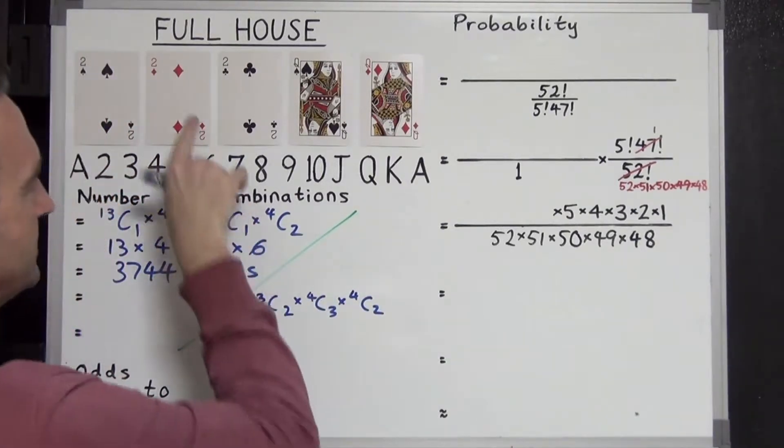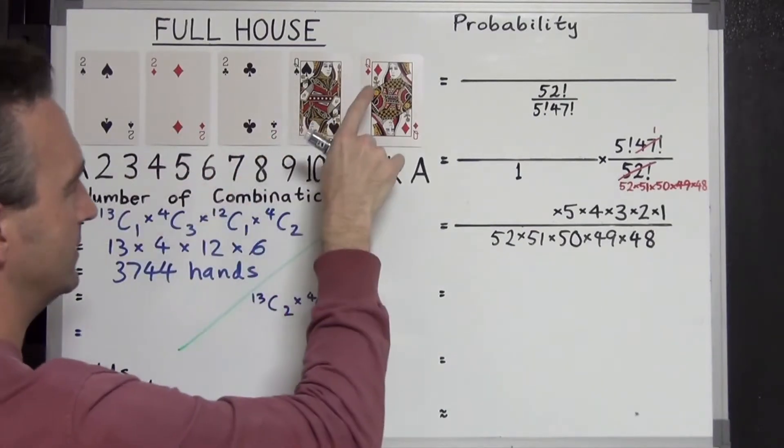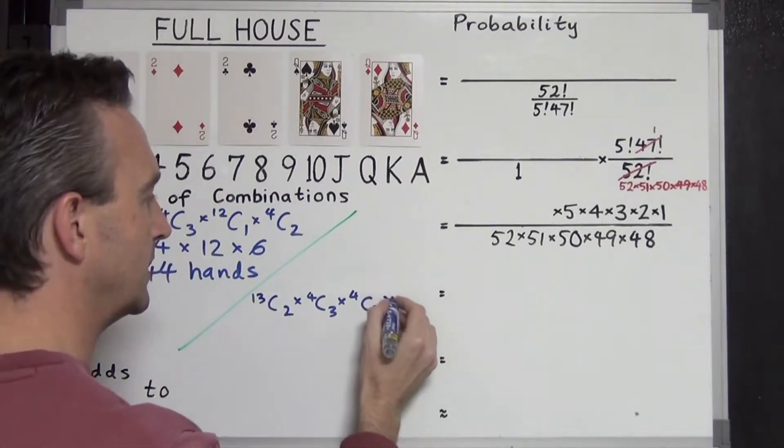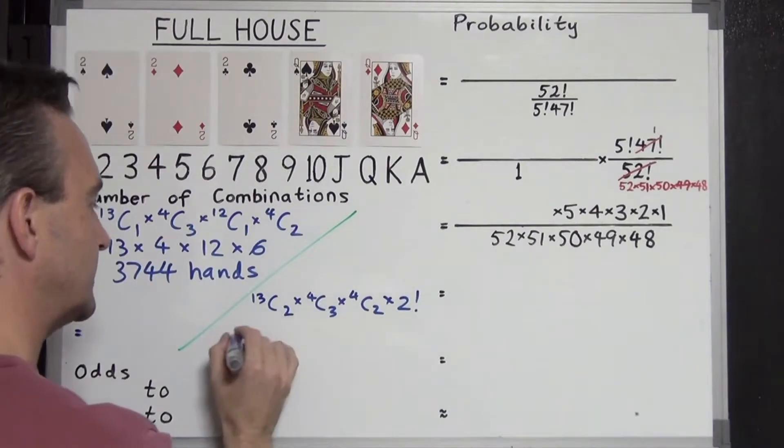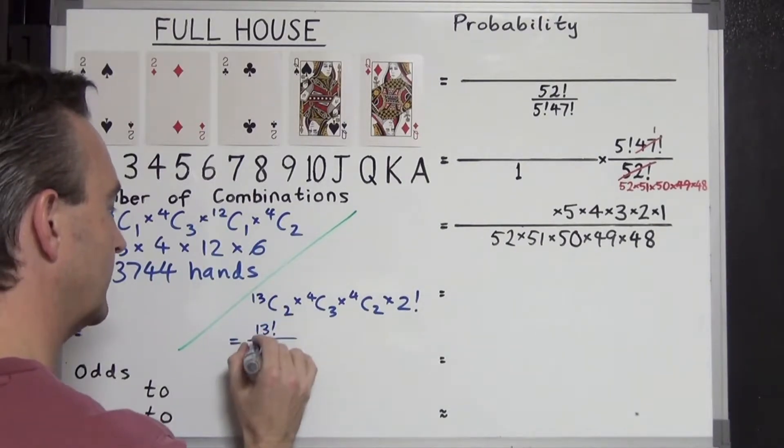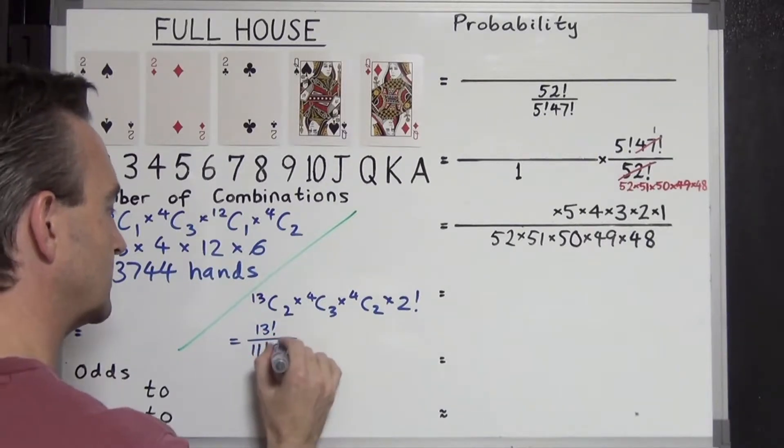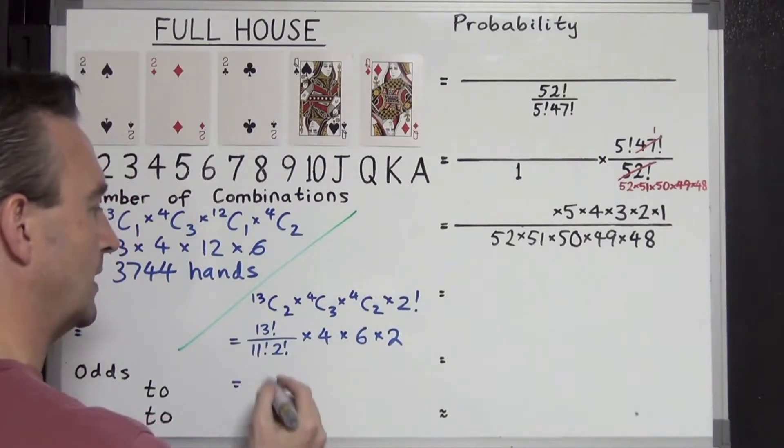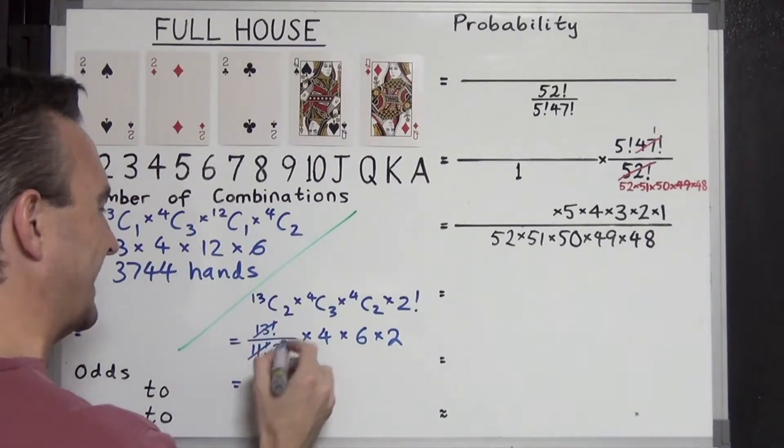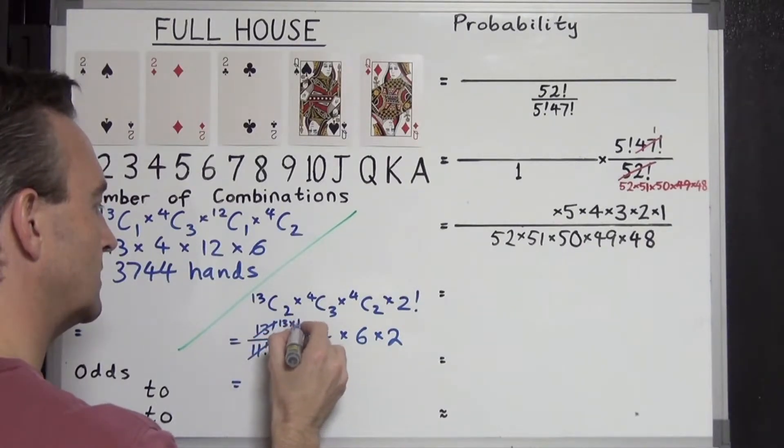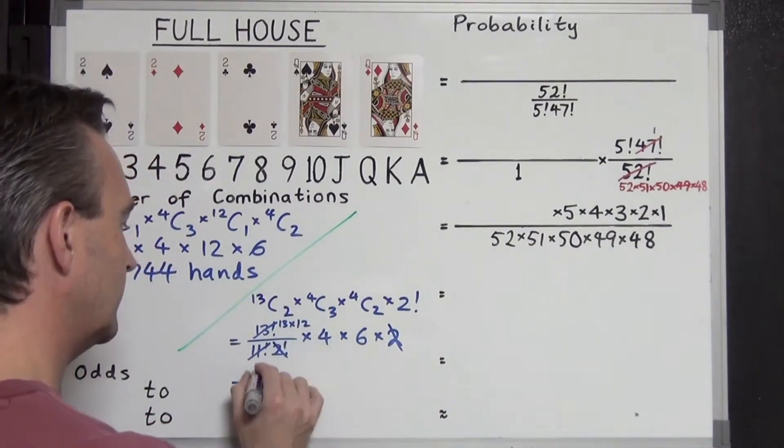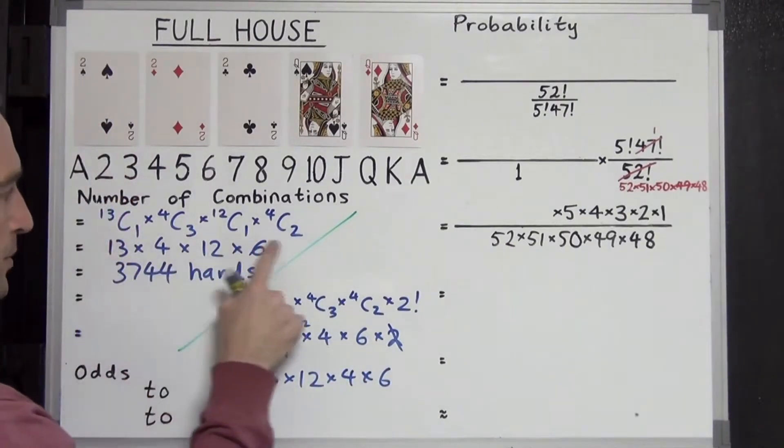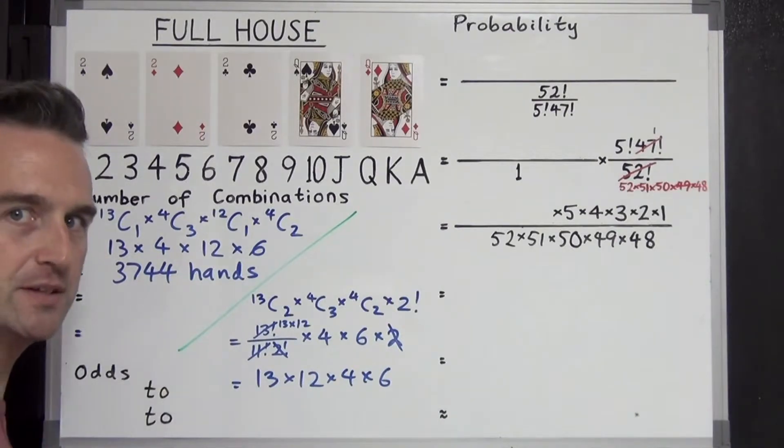But this is not quite finished. Since these two situations are different, we've got three of a kind here, two of a kind here, we actually have to take into account the flipping version as well, which is going to be double. So you're going to multiply that by two or factorial two. Evaluating this: 13C2 is factorial 13 over factorial 11 times factorial 2, 4C3 is 4, 4C2 is 6, and 2 factorial is 2. 13 factorial and 11 factorial cancel leaving 13 times 12 on the top, and the two cancels with the two factorial, leaving 13 times 12 times 4 times 6, which equals 3,744 hands again. Same answer, different way.